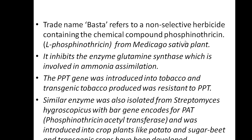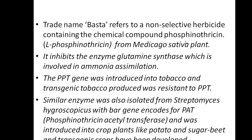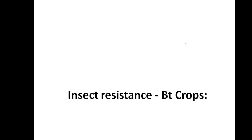By inhibiting glutamine synthase, the PPT gene was introduced into tobacco, and the transgenic tobacco produced was resistant to PPT (phosphinotricin). A similar enzyme isolated from Streptomyces hygroscopicus — with the bar gene encoding the PAT enzyme, phosphinotricin acetyltransferase — was introduced into crops like potato and sugar beet, and transgenic plants have been developed. The phosphinotricin from Medicago sativa inhibits glutamine synthase, thereby stopping ammonia assimilation.